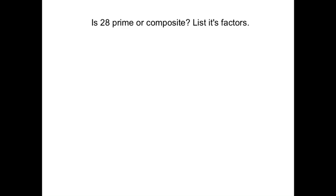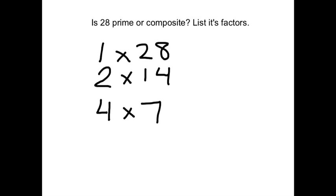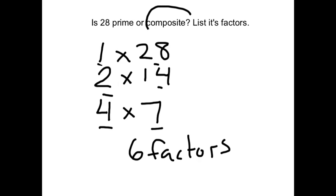So 28 can be multiplied from 1 times 28, it can be 2 times 14, and it can also be 4 times 7. So you can see that we've got 6 different factors. That means that 28 is composite because composite numbers have more than 2 factors.